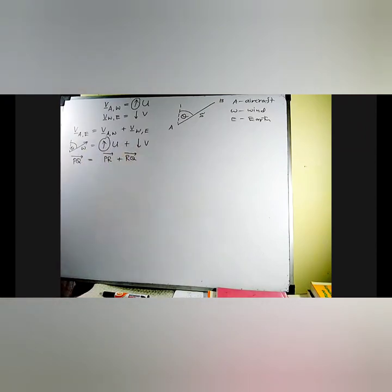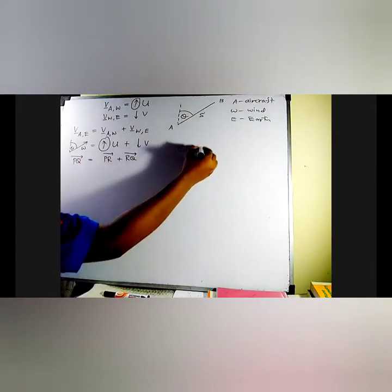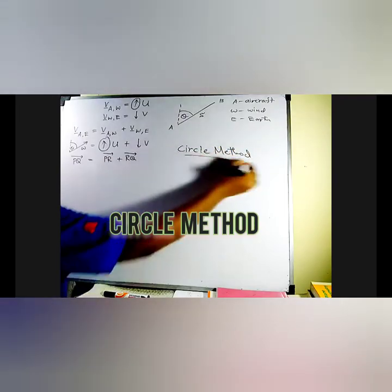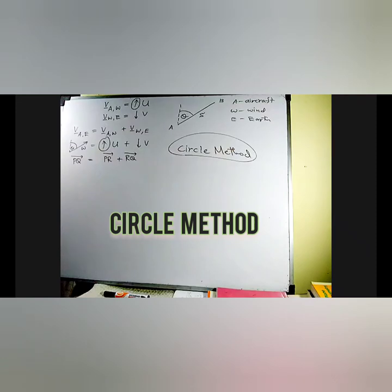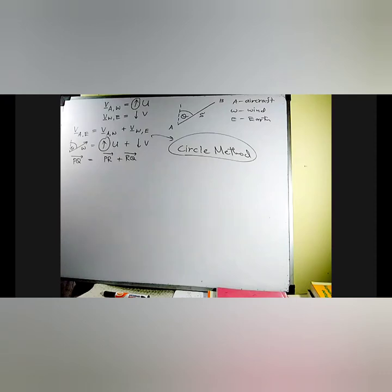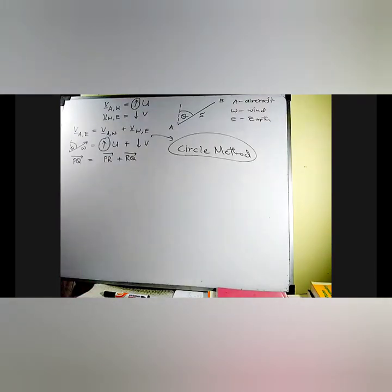This method is called the circle method — or relative velocity triangle circle method. It applies to aircraft problems and river problems. This is the process.